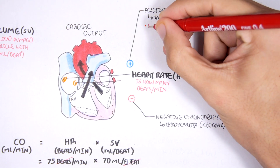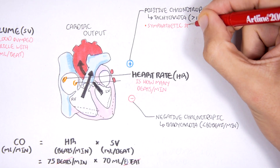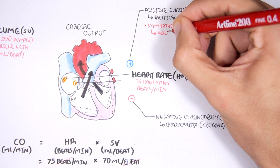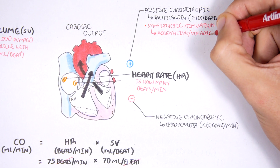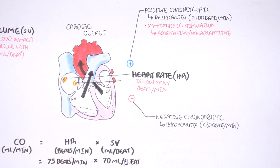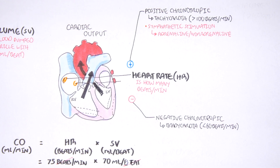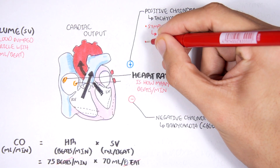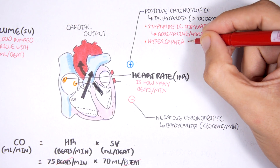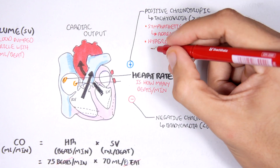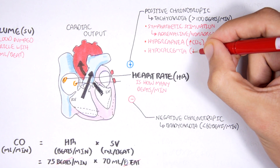Examples of positive chronotropic factors: the sympathetic nervous system is the main factor — the fight-or-flight response — which increases heart rate to pump more blood around the body. The sympathetic nervous system secretes adrenaline and noradrenaline, or epinephrine and norepinephrine, to increase heart rate. Additionally, hypercapnia, which is increased carbon dioxide, and a decrease in calcium will also increase heart rate.